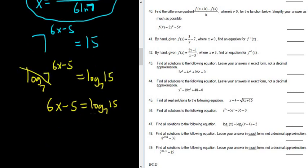All right, a little bit easier now than you just add the 5 and divide by 6. So 6x equals, adding 5, you get 5 plus log base 7 of 15.